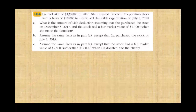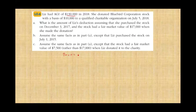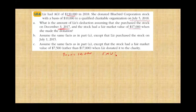Liz has an AGI of $130,000 in 2018. She donated Bluebird corporate stock with a basis of $10,000 to a qualified organization on July 5, 2018. If she purchased the stock on December 3, 2017 — less than a year — that's short-term ordinary income. The fair market value of the stock is $17,000. Since it's short-term, we take the lower of the two, which is the basis of $10,000.